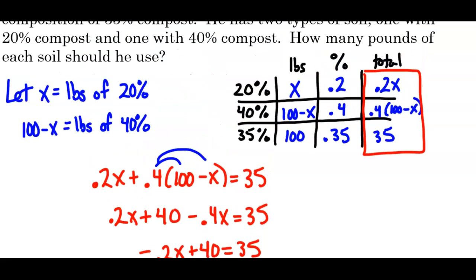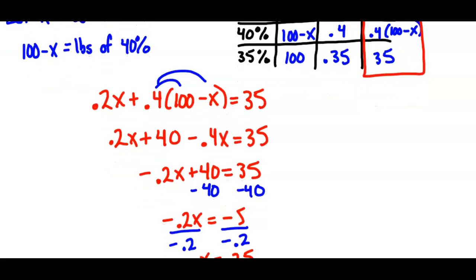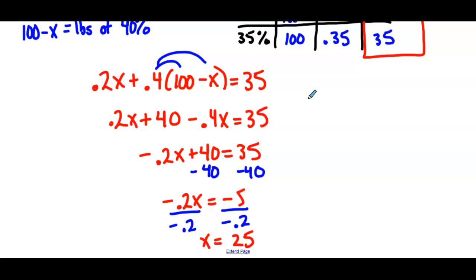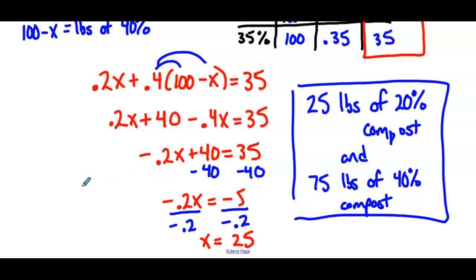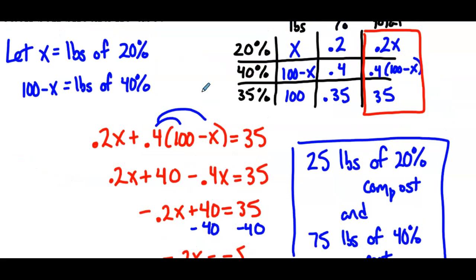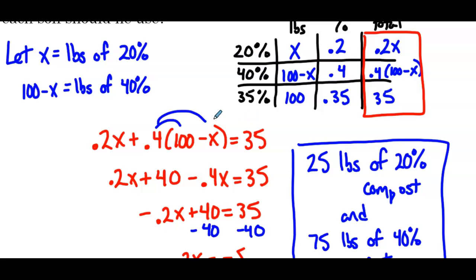We get 5 divided by 0.2, 25. So rereading the problem, what are they looking for? How many pounds of each soil should they use? So x is 25. So we're going to want 25 pounds of 20% compost. And then 100 minus 25, so 75 pounds of 40% compost. So hopefully this is starting to make sense. And again, whether you want to use the table or set up an equation directly, both will give you the same answer.